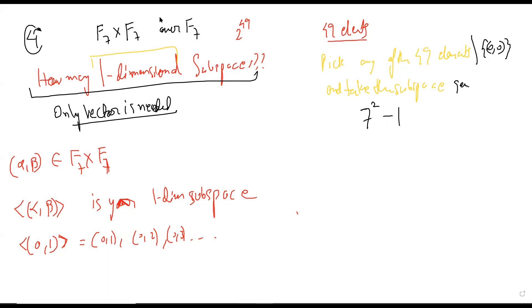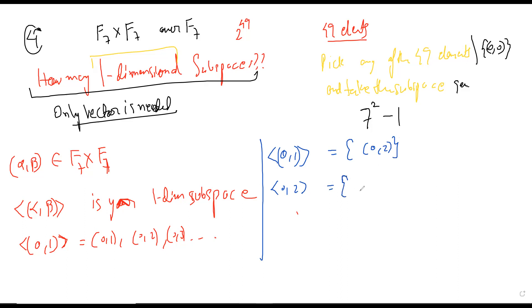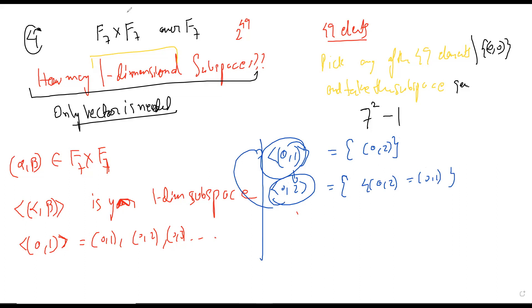Now some subspaces will be the same. For example, if you take the vector (0, 1) and generate your subspace, or if you take the vector (0, 2) and generate your subspace, you're going to get the same subspace. Because (0, 2) is in the subspace generated by (0, 1), and also (0, 1) is in the subspace generated by (0, 2) — just take four times (0, 2) and you get (0, 1) in mod 7. So there is a massive overcounting going on.